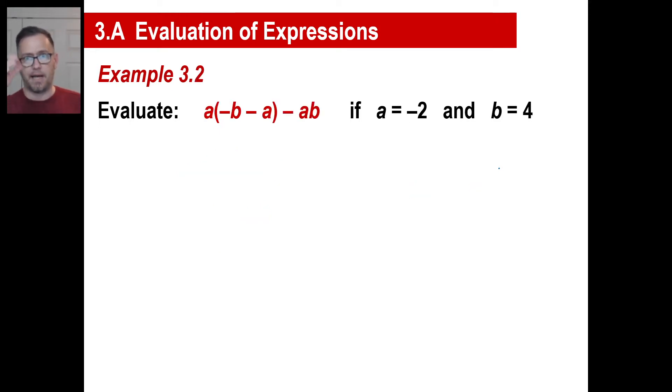Let's do another one. Pause this and copy it down very accurately. I'm assuming you've unpaused now. Evaluate this if a is negative 2 and b is 4. So let's very carefully write this out. A is negative 2, I'm going to write negative 2. Now I'm going to write the opposite of b, which is going to be negative 4. Now I'm going to write the opposite of a, and if a is negative 2, then the opposite of a is positive 2.